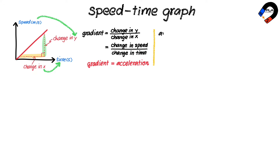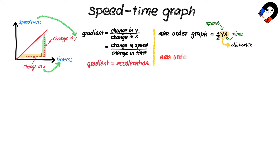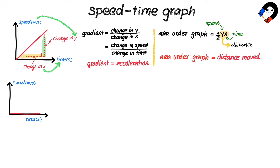Therefore, the gradient of the graph is the acceleration of the object. The area under the graph is half of y multiplied by x, where y represents speed and x represents time. Since speed multiplied by time equals distance moved, the area under the graph is the distance moved. A horizontal line at the x-axis with zero gradient indicates that the object is at rest, because the speed is zero and there is no acceleration.